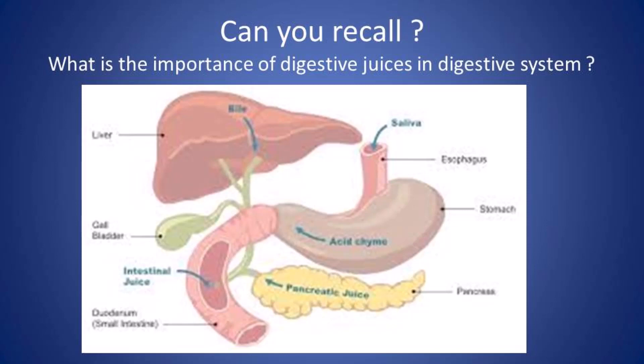The fourth question is: what is the importance of digestive juices in the digestive system? Different glands secrete digestive juices that contain enzymes. Enzymes act as catalysts and bring about chemical reactions at a faster pace. The digestive juices of the stomach make the pH of the digestive tract acidic, while intestinal juice makes it alkaline, together digesting the food.